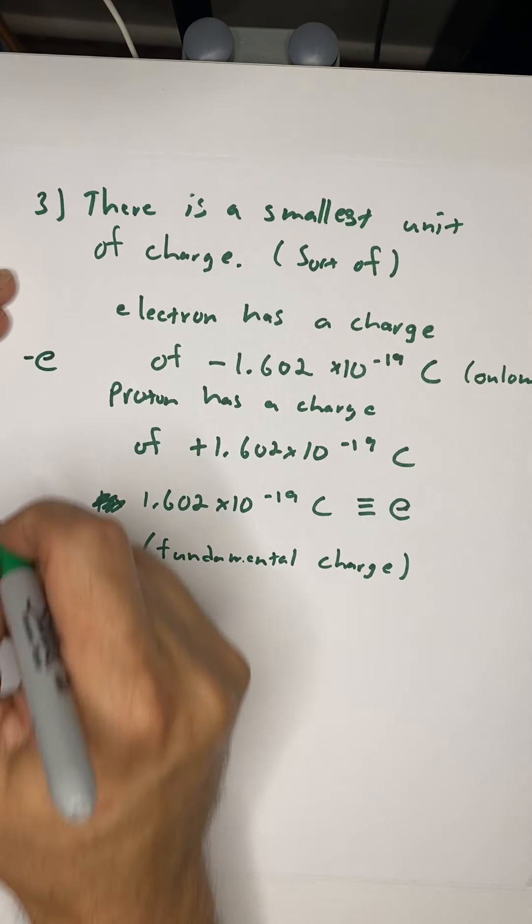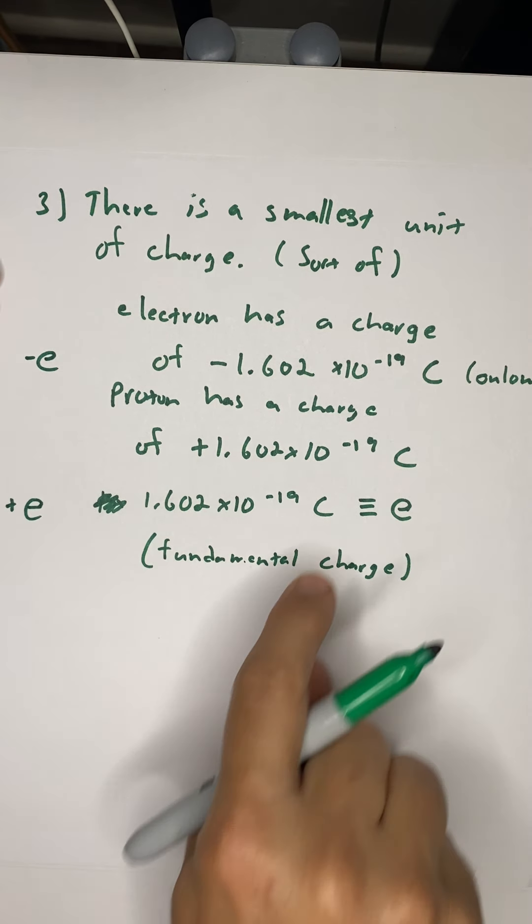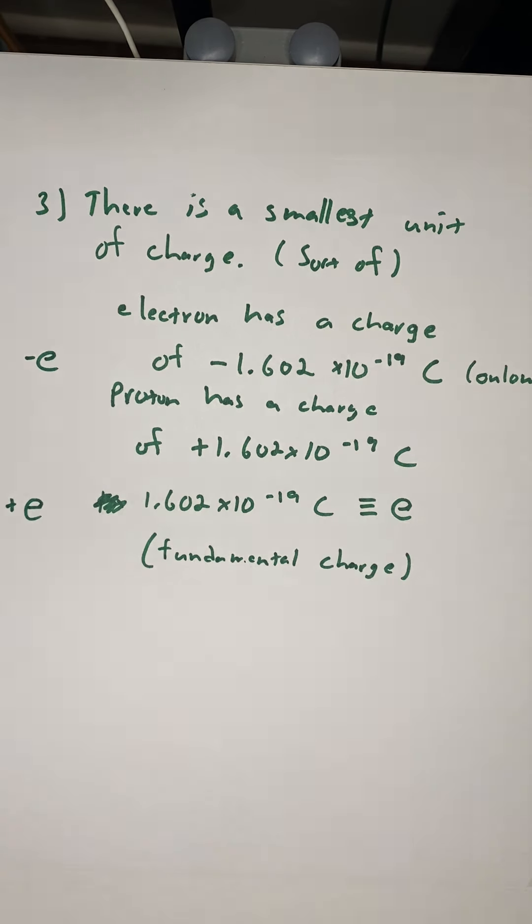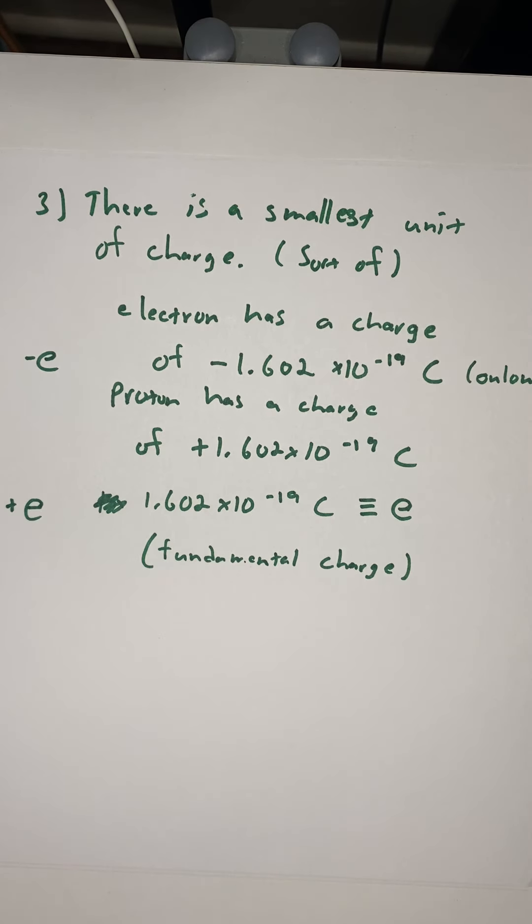So we can say now that an electron has a charge of minus E. A proton has a charge of plus or positive E. E is always going to be defined positively, just like in Physics 1, little g was always defined positively. If you need it to be negative, that's fine. You have to put the negative sign on the outside. But that is the third thing we know about charges, that there is a smallest unit of charge, which we call the fundamental charge.